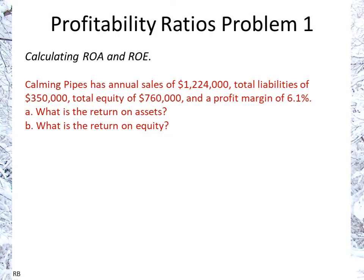Profitability Ratio Problem 1: Calculating ROA and ROE. Common Pipes has annual sales of $1.224 million, total liability of $350,000, and total equity of $760,000, and a profit margin of 6.1%.